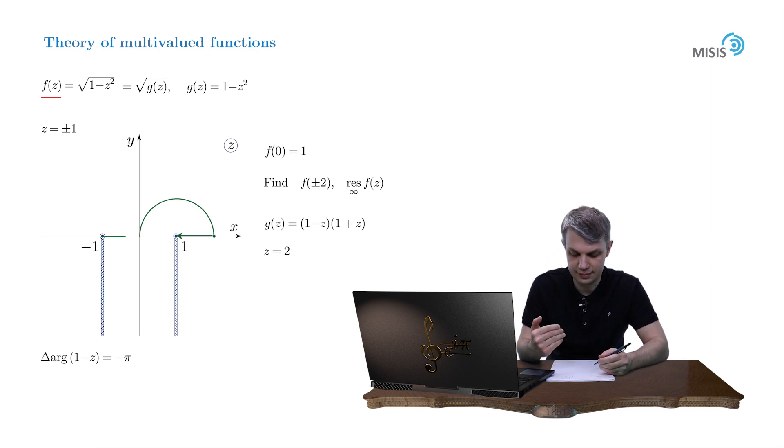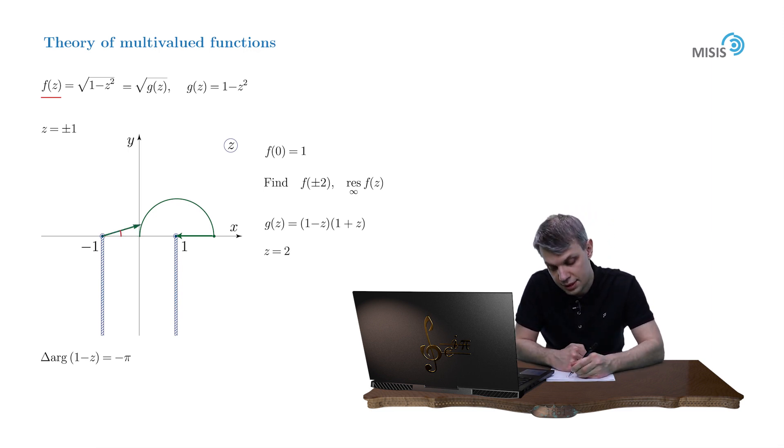Then arrow 1 plus z. You see that this arrow just sways but doesn't undergo any rotation at all. So the delta argument of 1 plus z is equal to 0.